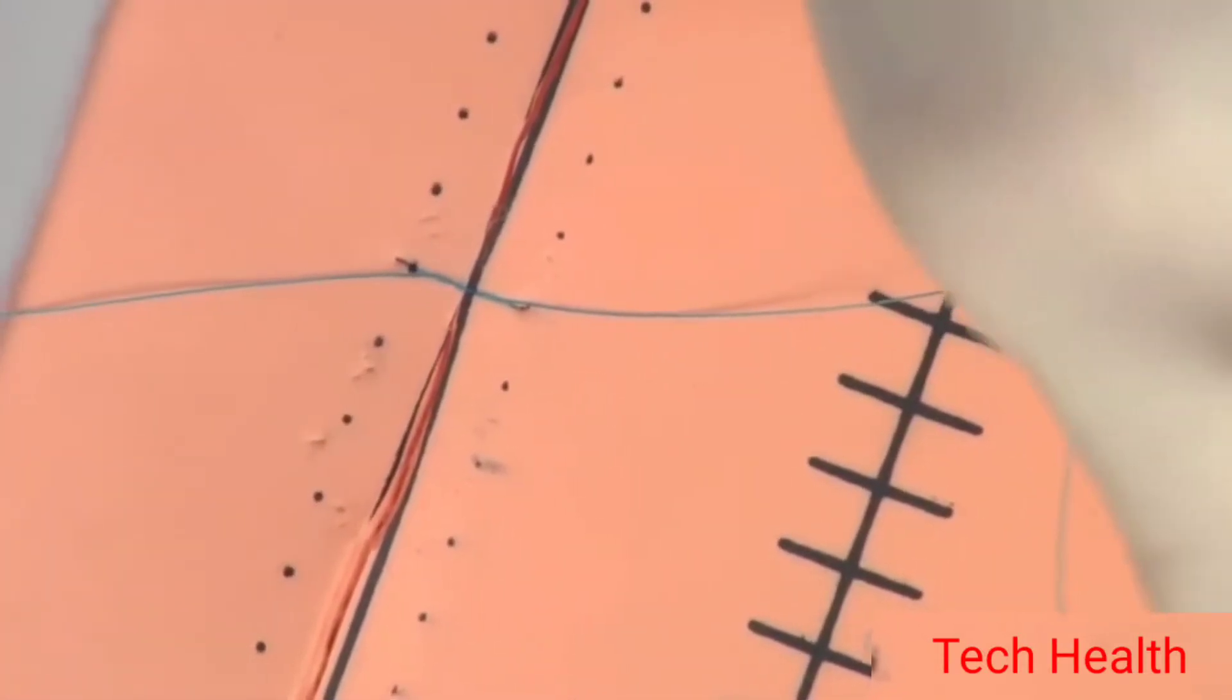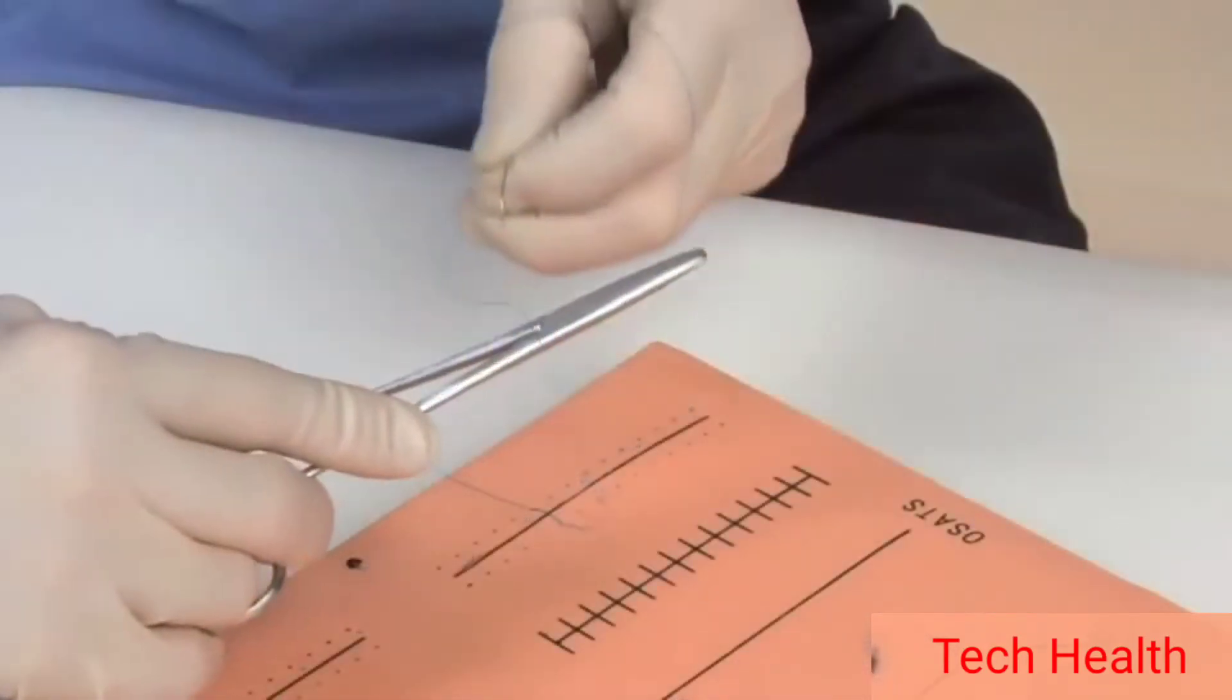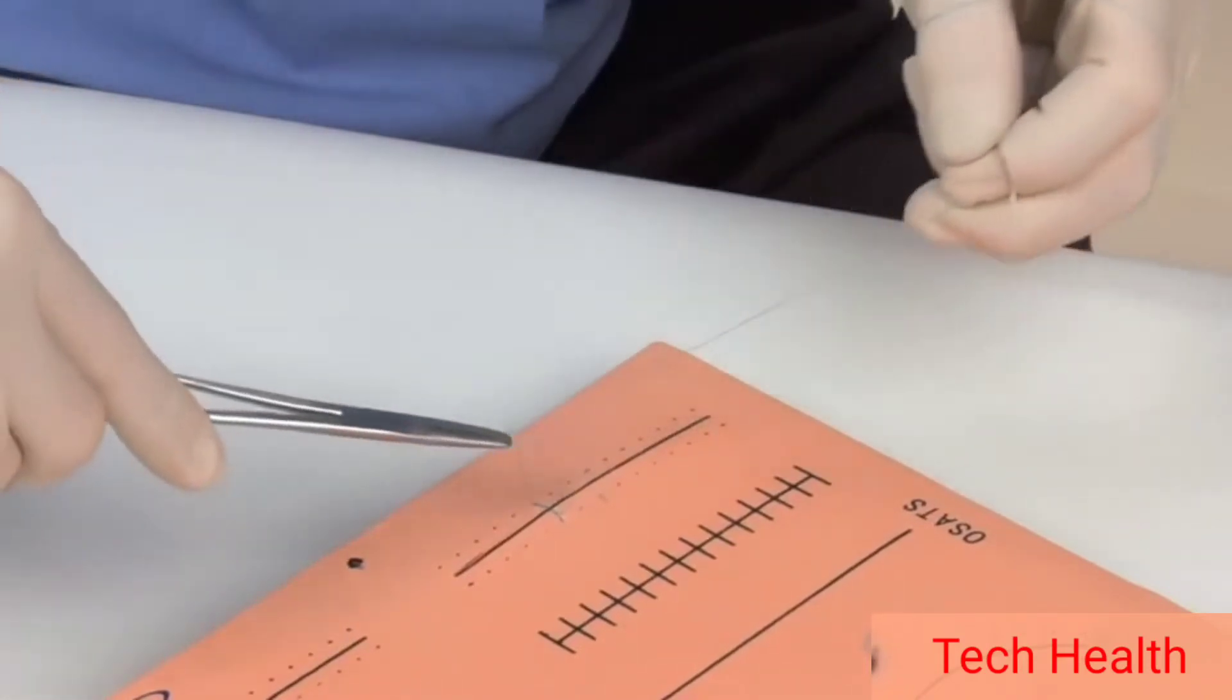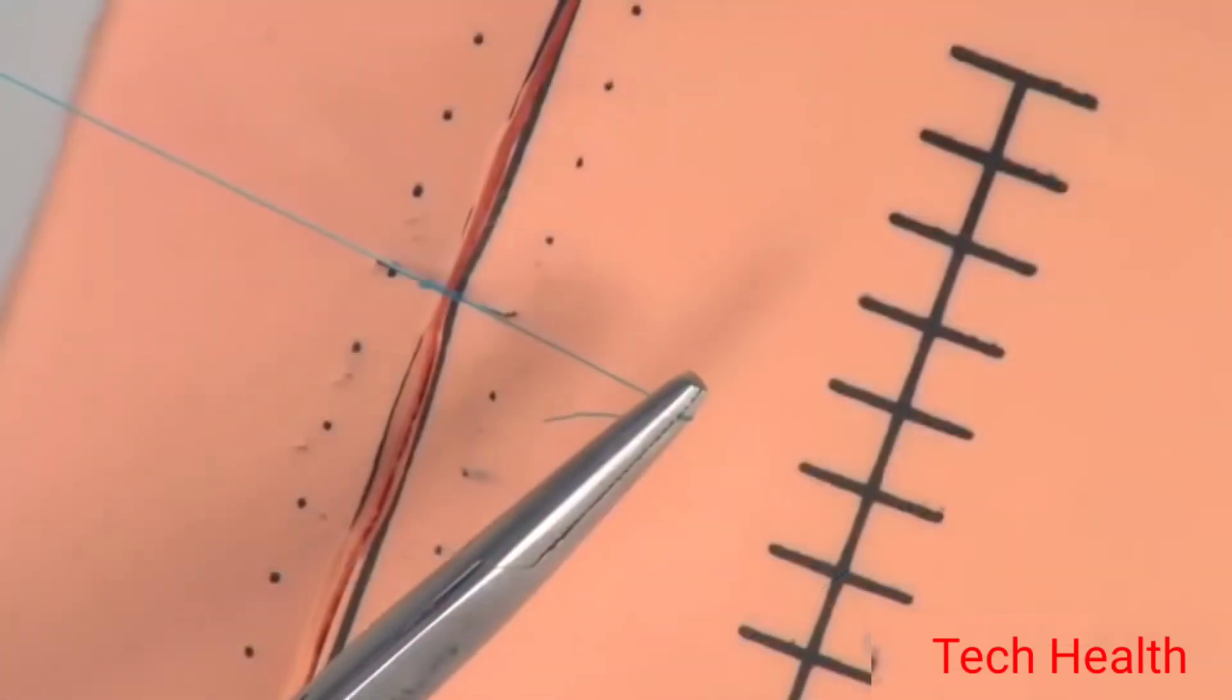Next, start toward yourself with the needle driver. Move the needle driver away into the suture. Wrap it around once, grab the tag, and continue moving the needle driver away from you.